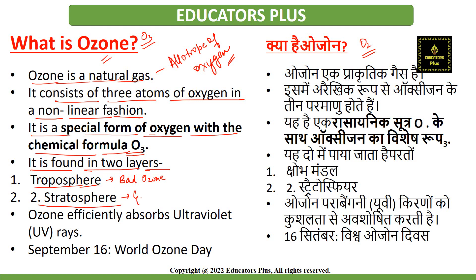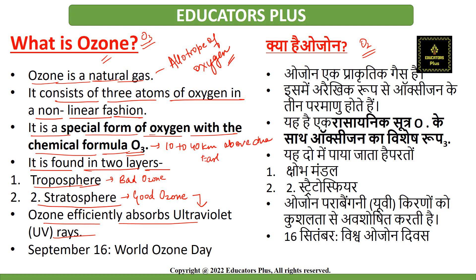Ozone in the stratosphere is good because it protects the earth by absorbing ultraviolet radiations that are harmful in nature. The ozone layer resides high up in the atmosphere between 10 to 40 kilometers above the earth's surface. This region is the stratosphere and it contains about 90 percent of all the ozone in the atmosphere.